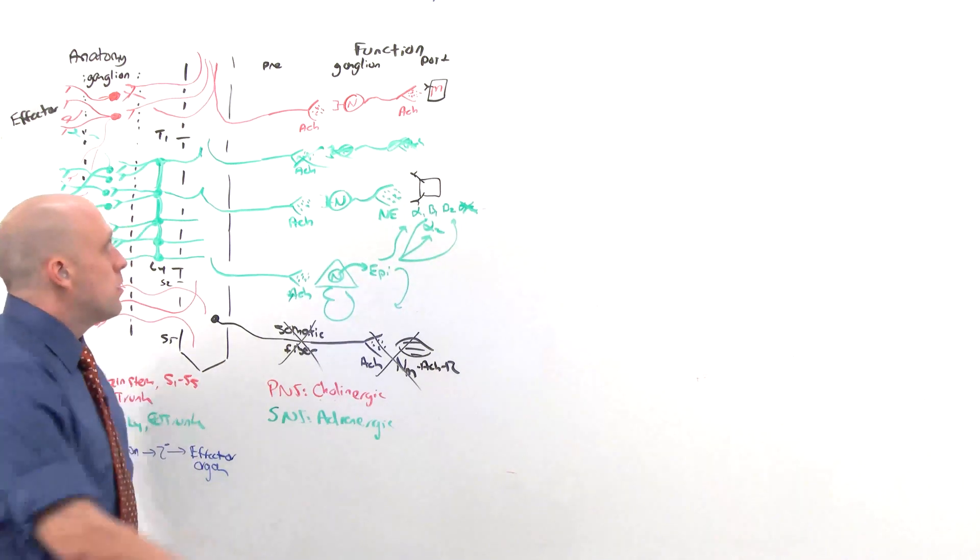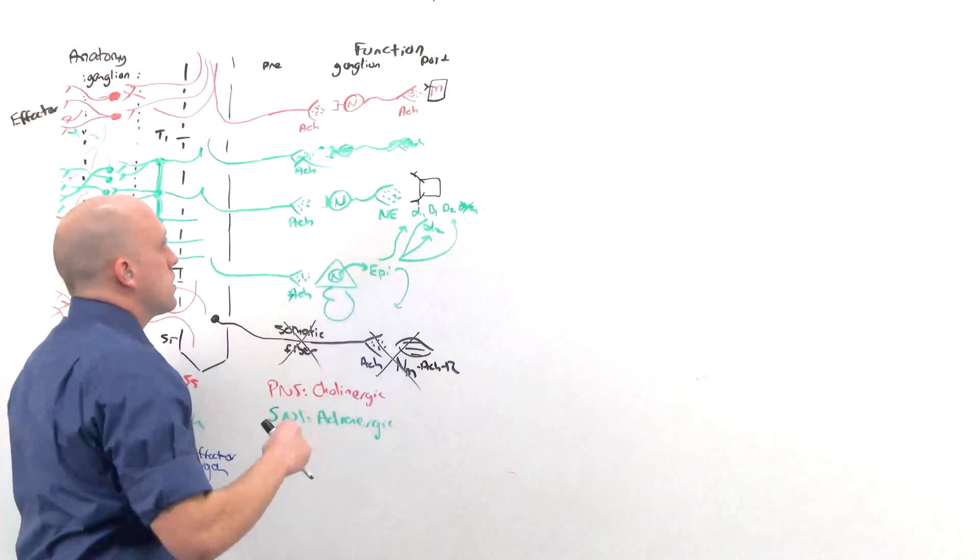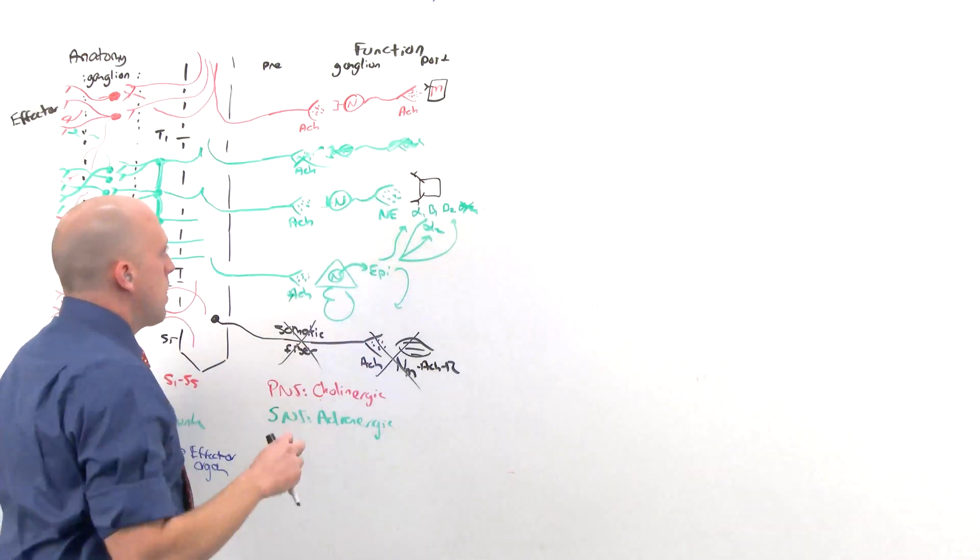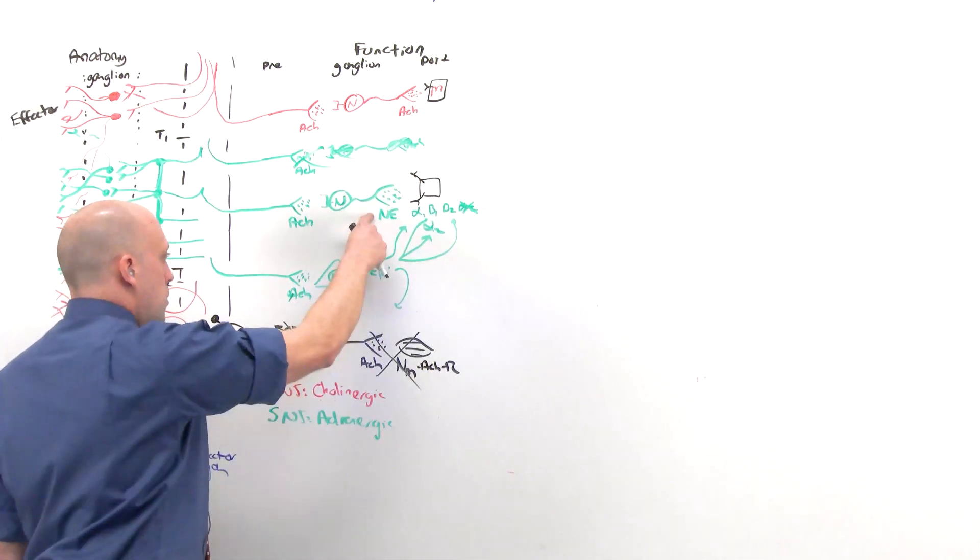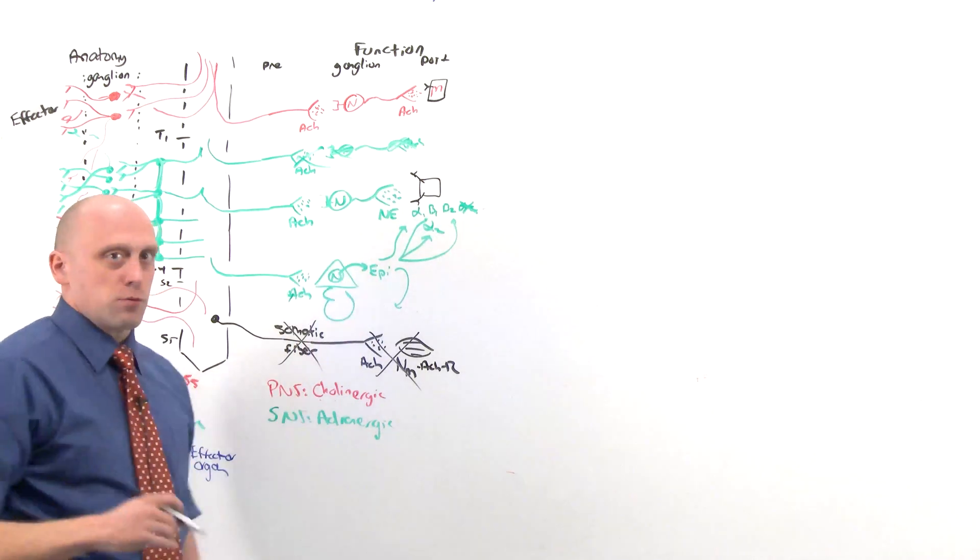All autonomics operate the first connection with a nicotinic acetylcholine receptor. Then afterwards, parasympathetic nervous system acts through muscarinic receptors, whereas sympathetic nervous system acts through norepinephrine and epinephrine on the adrenergic receptors.